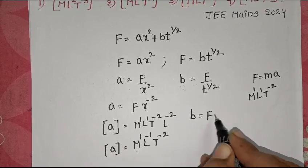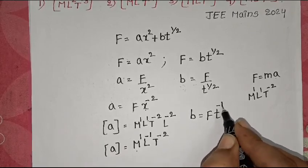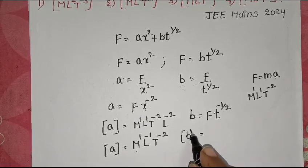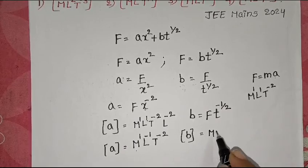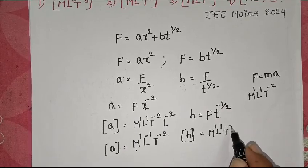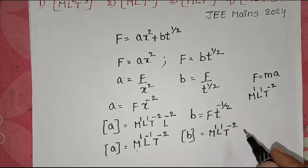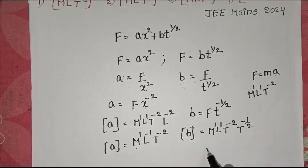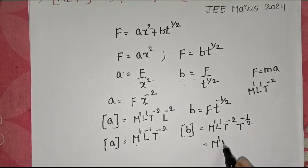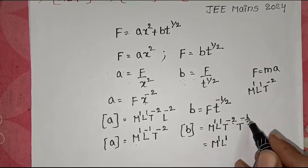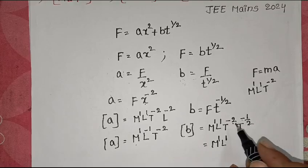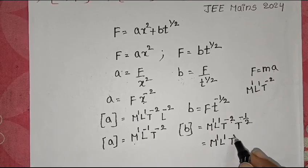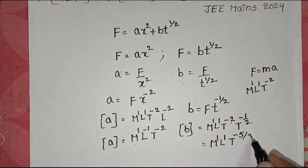B equals F · T^(−1/2). Dimensions of B equal force dimensions M¹L¹T⁻² multiplied by T^(−1/2). Combining the T powers: −2 + (−1/2) gives LCM of 2: (−4 − 1)/2 = −5/2. So dimensions of B = M¹L¹T^(−5/2).